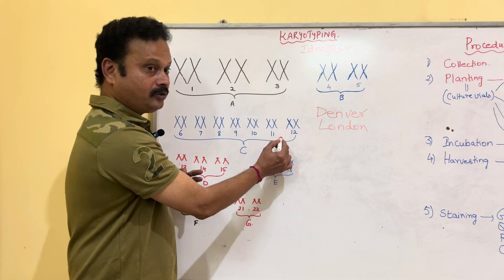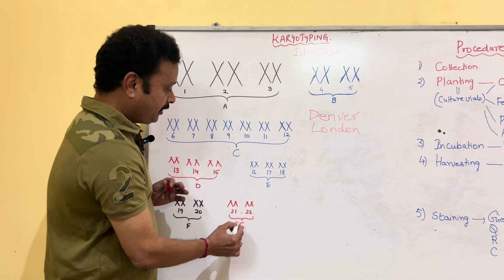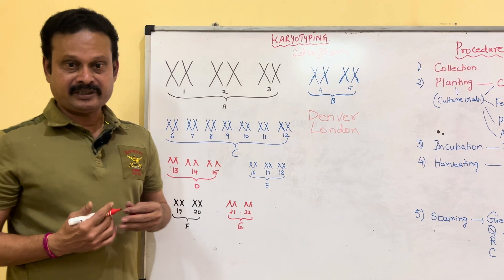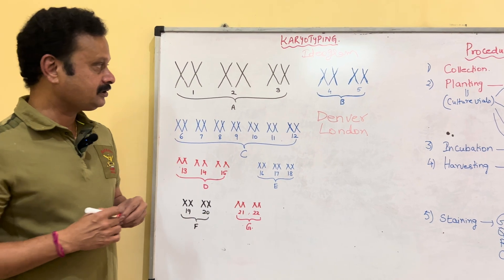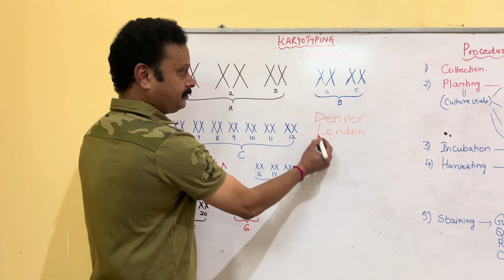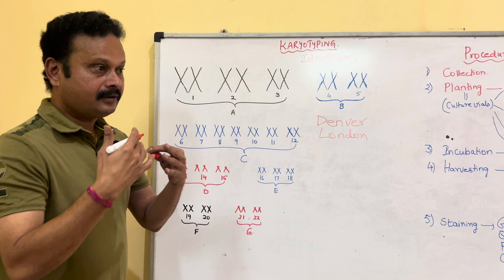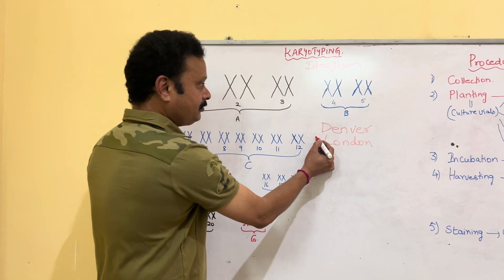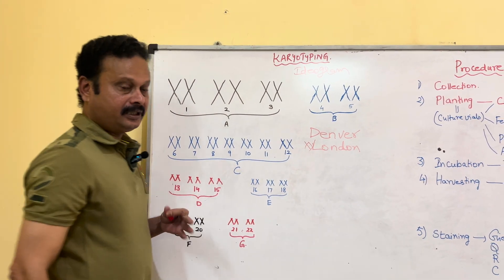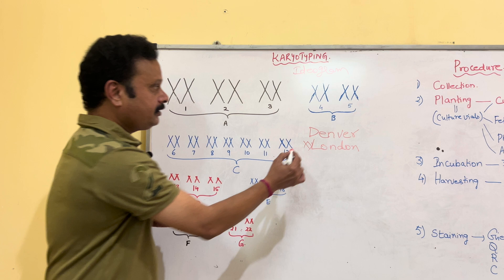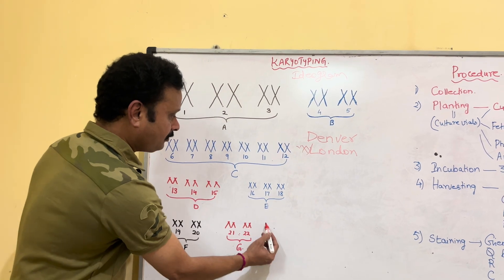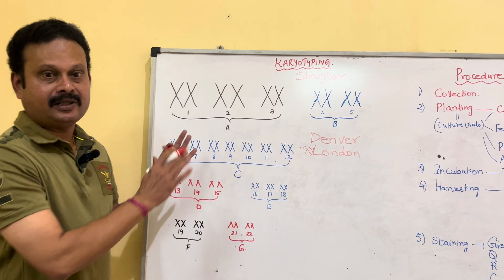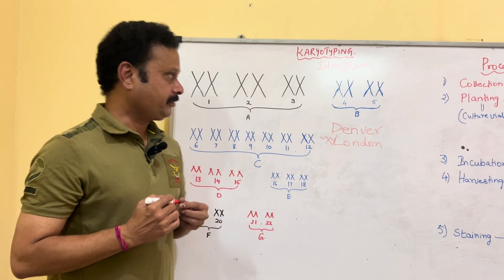So, the X chromosome belongs to the C group and the Y chromosome belongs to the G group. In the karyotype charts placed in various medical schools, if it is a female karyotype they will show two X chromosomes, and if it is a male one, one X chromosome and one Y chromosome — denoting a normal male or female karyotyping.